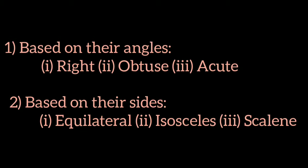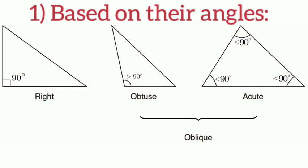There are two types of classifications. The first one is based on their angles, the second one is based on their sides. First type is right angle triangle, second is obtuse angle triangle, and the third one is acute angle triangle. You can also call them right triangle, obtuse triangle, acute triangle. Still the same, okay?